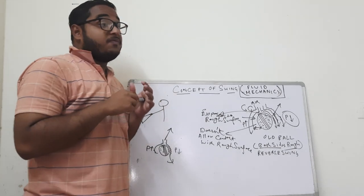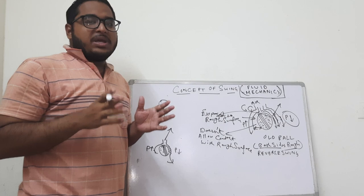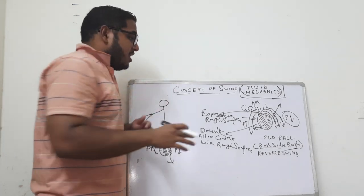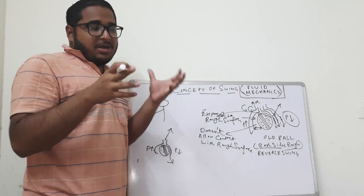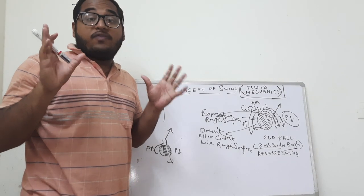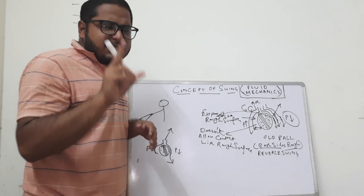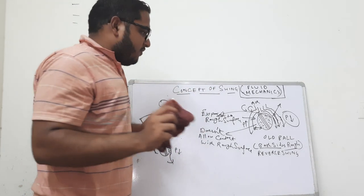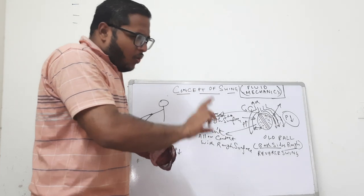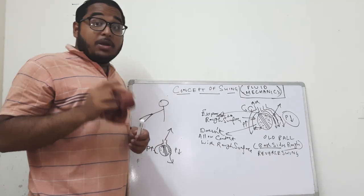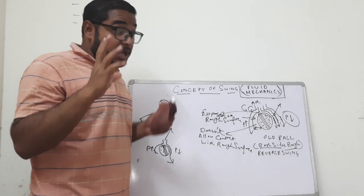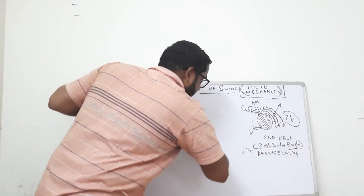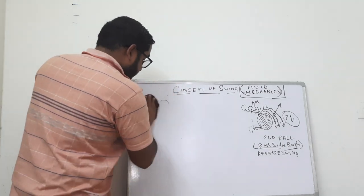However, this reverse swing doesn't play a very effective role when both surfaces are equally rough, because both air layers face almost equal friction and the ball doesn't swing that much. The seam plays only a minor role, producing a little bit of reverse swing. But what if one surface is shiny and one surface is rough? That is very interesting - let us discuss this.